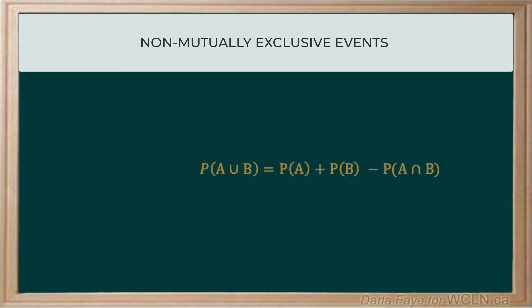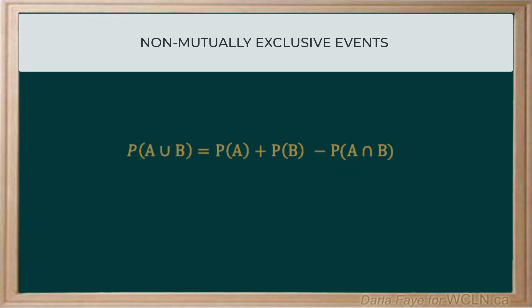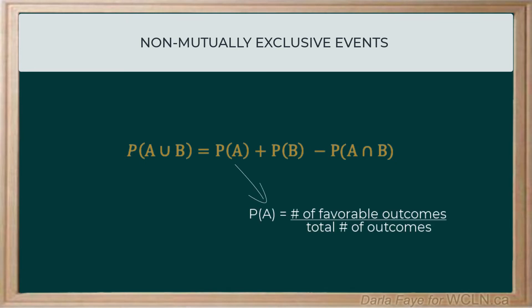Just remember that when we're calculating probabilities, we are using ratios, percentages, or decimals that compare the number of favorable outcomes to the total number of outcomes for that event.